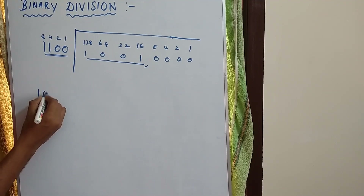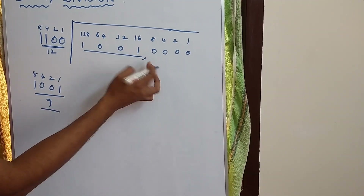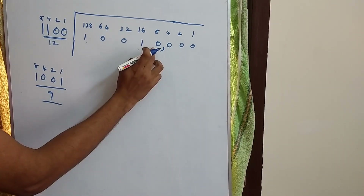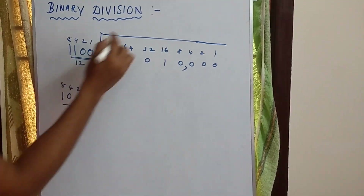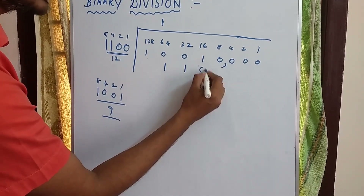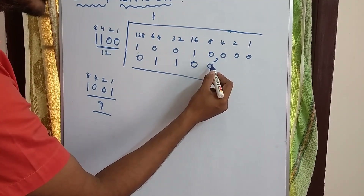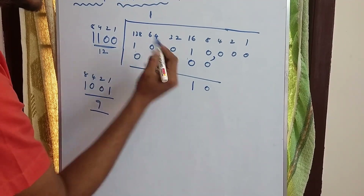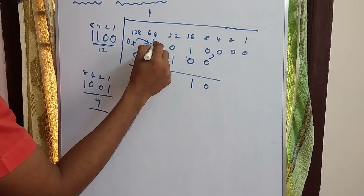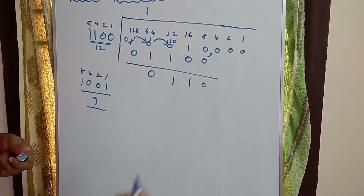This code is 8421. The code for 9 is 1001 and for 12 is 1100. We have the dividend. So 1 into 12 is 12. We substitute: 1, 1, 0, 0. Now we divide using repeated subtraction: 0 minus 0 is 0, 1 minus 0 is 1, here is 0, no number, no number, 0, 1, then 10 minus 1 is 1, 1 minus 1 is 0. So we get 0, 1, 1, 0.